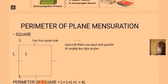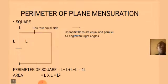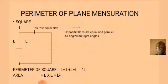Let's go into calculation. Let's see how we can calculate perimeters of a plane mensuration. We'll start with the square. What are the properties of a square? A square has four equal sides. The opposite sides are equal and parallel. All angles are right angles. Because it has four equal sides, let's represent each side with L. The perimeter will be L plus L plus L plus L, which equals 4L. The area of a square is length L multiplied by L, which equals L squared.